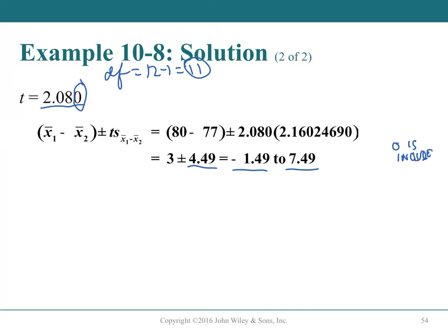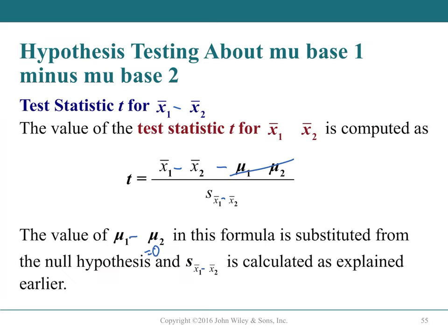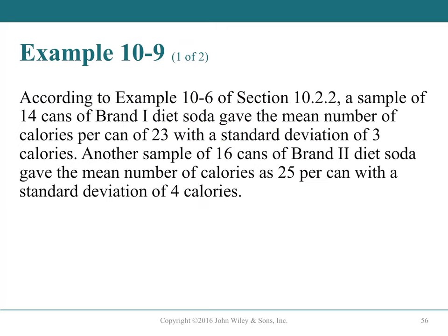The two-sample t-test statistic is t = (x̄₁ - x̄₂ - 0) / S, where the zero comes from H₀ and is always dropped. S is calculated as √(s₁²/n₁ + s₂²/n₂), and degrees of freedom use the smaller-sample-minus-1 shortcut.